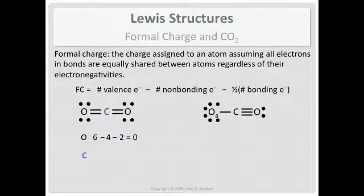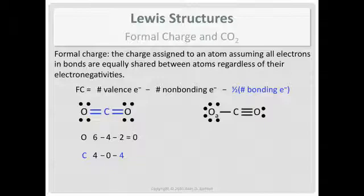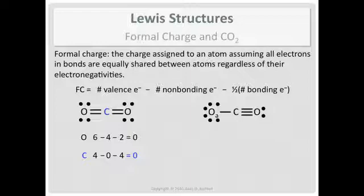Now for carbon in the double-double structure: column 4A, four valence electrons. There are no non-bonding or lone pair electrons on carbon, so that's zero. Carbon is sharing eight electrons with the two oxygens: eight divided by two is four — or four bonds. So carbon has a formal charge of zero. Just like oxidation numbers, all formal charges must add up to the overall charge on the species. Carbon dioxide is neutral, so the sum is zero. We get zero for both oxygens and zero for carbon — that all adds up to zero.